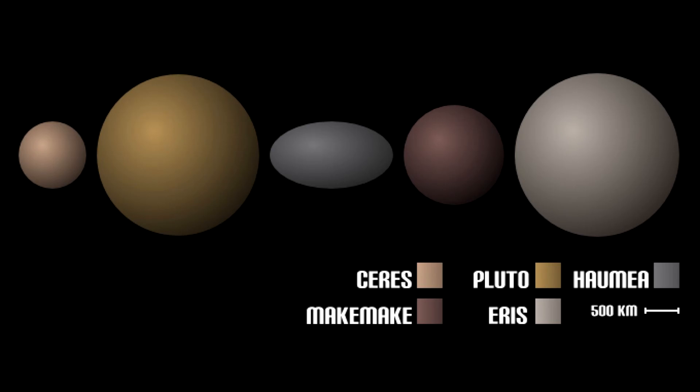Dwarf planets. So basically you know that in our solar system there are 8 planets and one more dwarf planet named Pluto, right? Actually wrong. There are 4 more dwarf planets: Ceres, Haumea, Makemake and Eris.